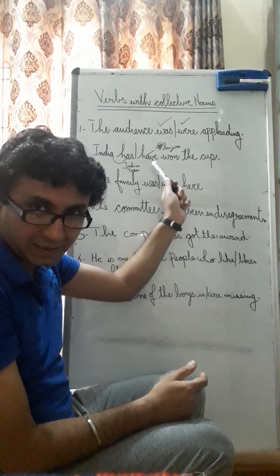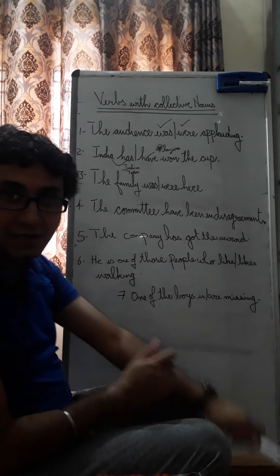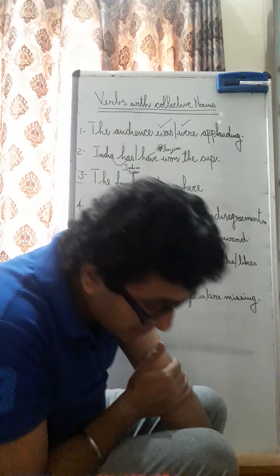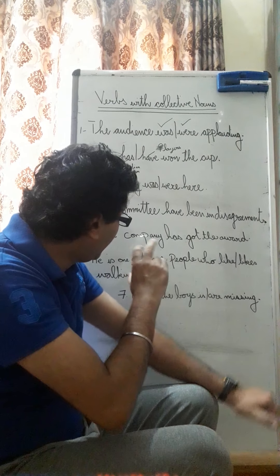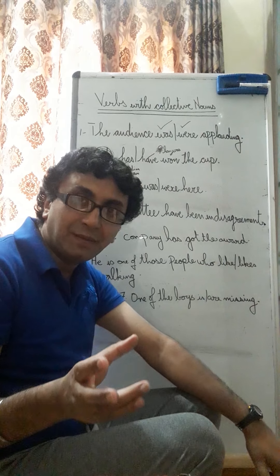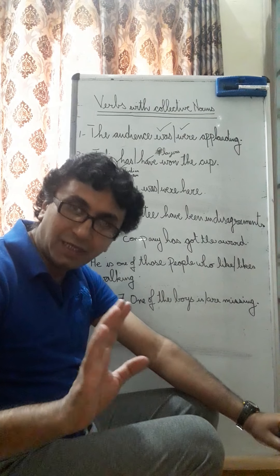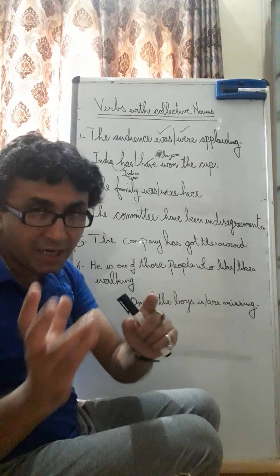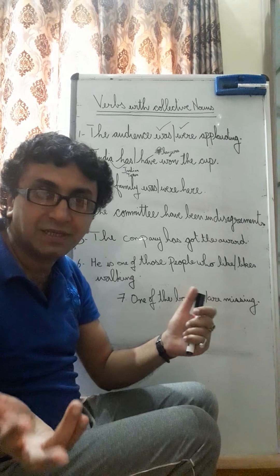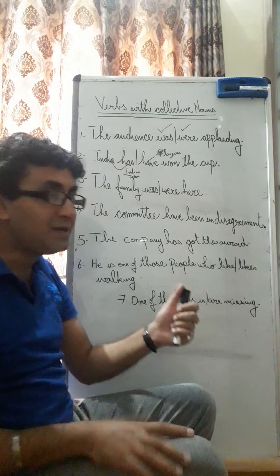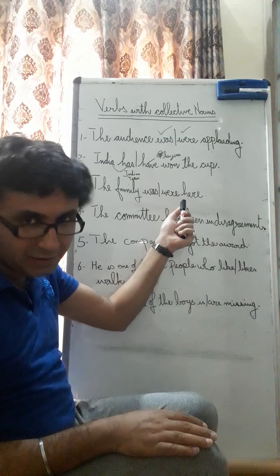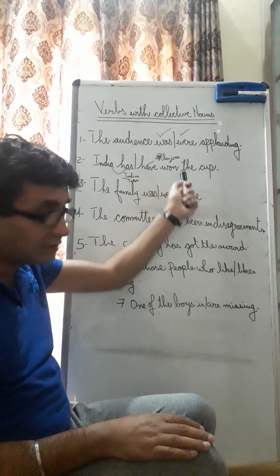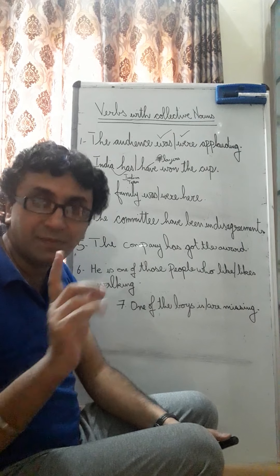'The family was here' or 'the family were here' — interesting again. 'The family was here' means as a collective unit, the family was here. 'The family were here' means the members of the family were here. A better way to write it would be 'my family members were here' or 'the family was here.' More reading will help you overcome such obstacles.